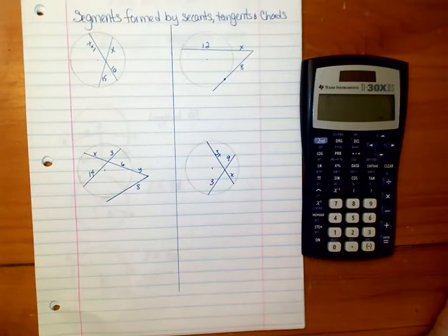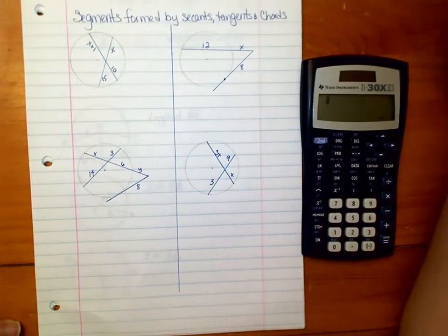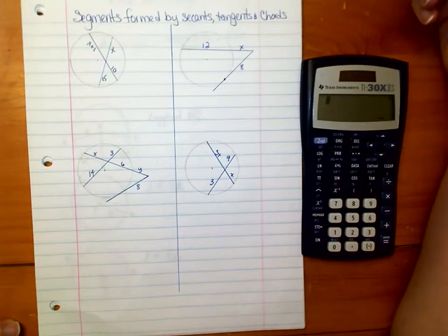Greetings, this is M-squared. We're going to do another few examples of all three kinds of the segments formed by secants, tangents, and chords.